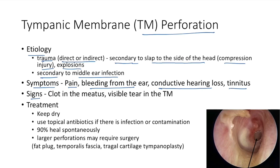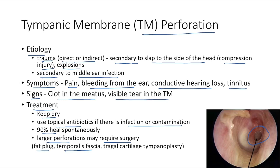Signs of tympanic membrane perforation include a clot in the meatus and a visible tear in the tympanic membrane. Treatment: keep the ear dry, use topical antibiotics if there is infection or contamination. Ninety percent of cases heal spontaneously; larger perforations require surgery including fat plug, temporalis fascia, or tragal cartilage tympanoplasty.